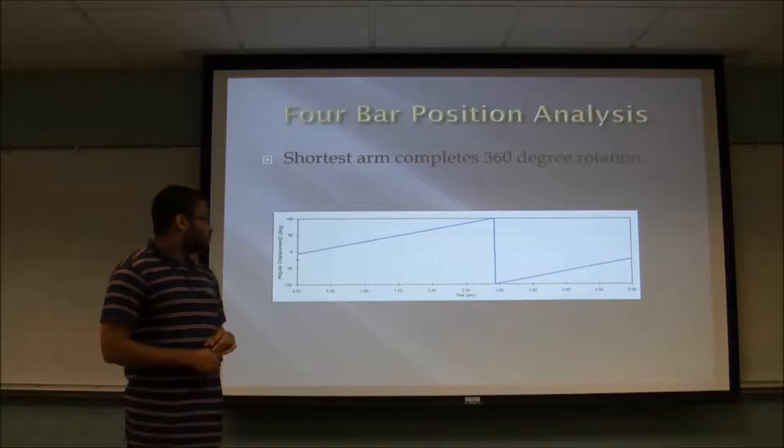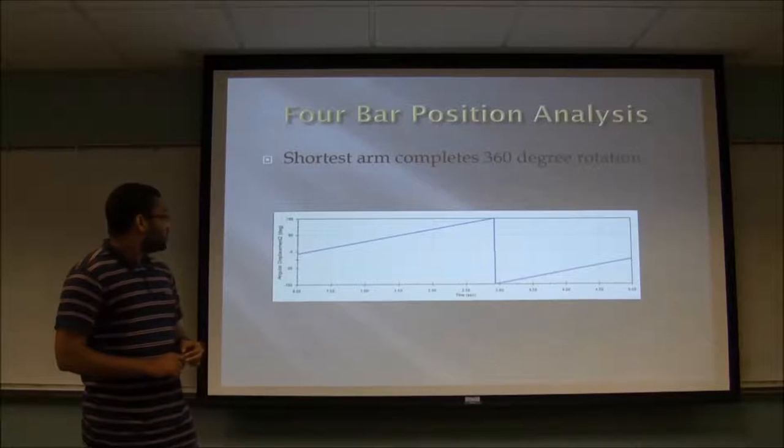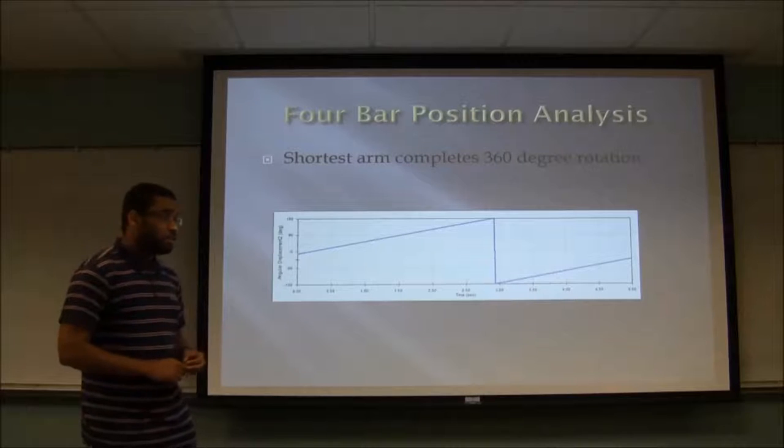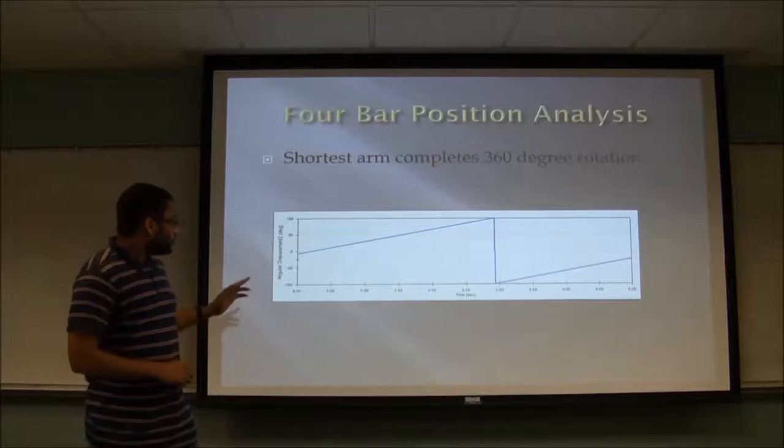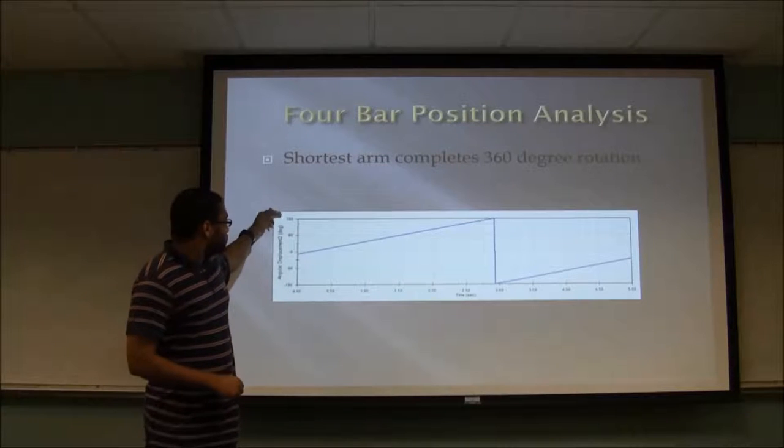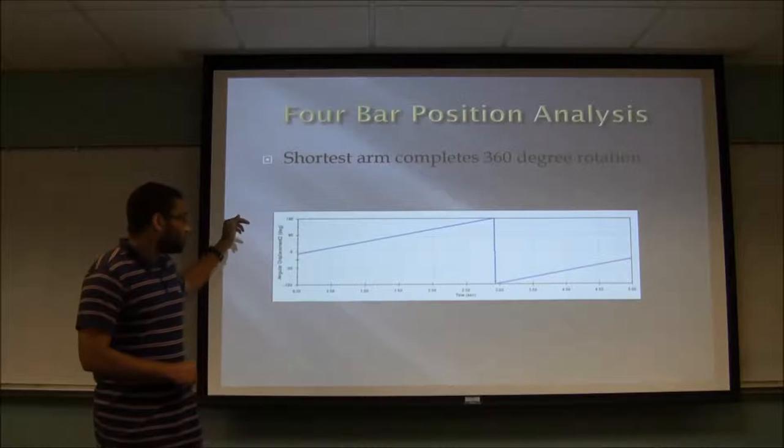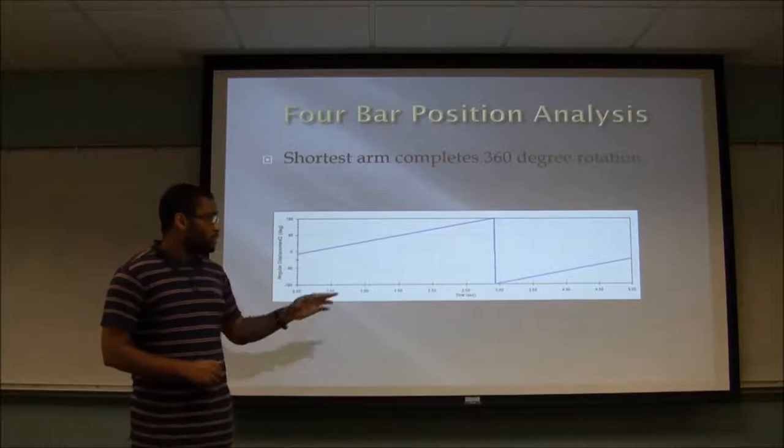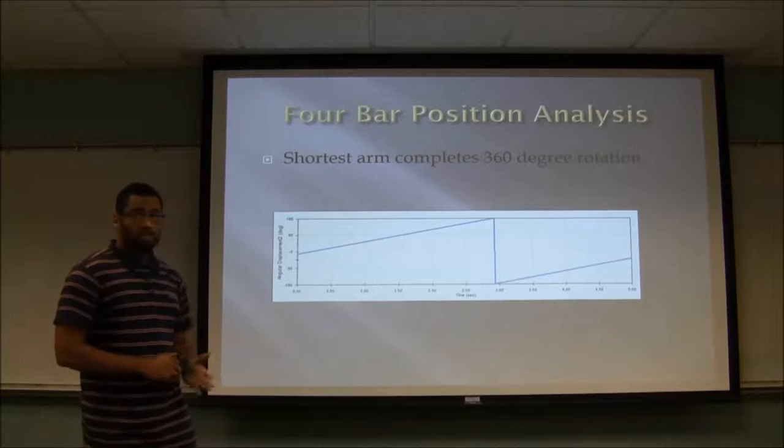This here exemplifies the motion for our shortest length in the mechanism, R2. It's rotating a full 360 degrees, and as you can see, when it comes to the first 180 degrees of rotation, it completely reverses its direction to go in the opposite direction to complete its full rotation.